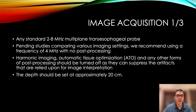Any standard 2 to 8 MHz multi-plane transesophageal probe can be used to perform transesophageal lung ultrasound. Pending studies comparing various imaging settings, we recommend using a frequency of 4 MHz with no post-processing. Harmonic imaging, automatic tissue optimization, and any other forms of post-processing should ideally be turned off, as they can suppress the artifacts that are relied upon for image interpretation. The depth of the field should be set at approximately 20 cm.